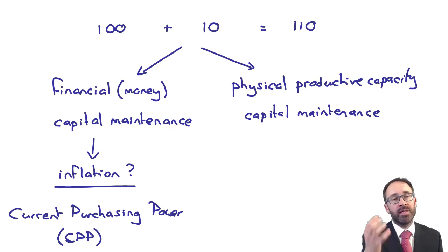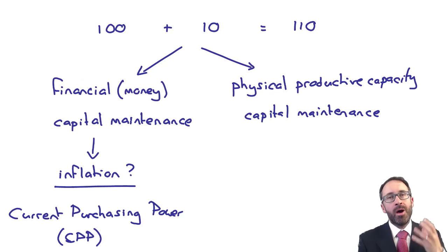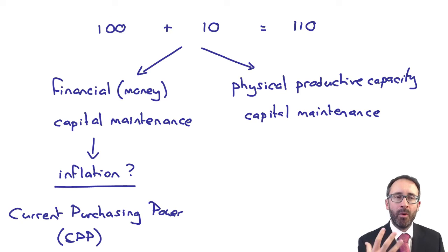Again, what we're asking ourselves there is we're saying, look, the closing capital is greater than the opening capital, so it looks like we've made a profit. But with that closing capital, could we actually buy more units of a specific asset than what we could at the start of the year?